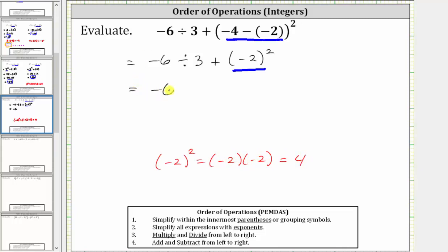The expression simplifies to negative six divided by three plus positive four. Notice now we have division and addition, and we always multiply and divide before we add and subtract, and therefore the next step is to determine negative six divided by positive three.